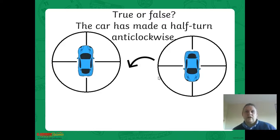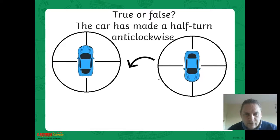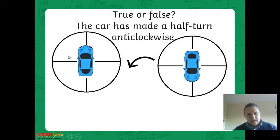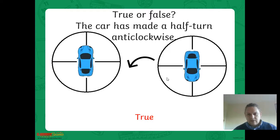True or false: the car has made a half turn anticlockwise. Anticlockwise is this direction. Has it made a half turn? It's made a quarter... half. Yes, it has - it's made a half turn anticlockwise.